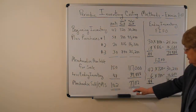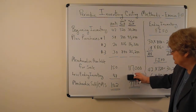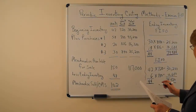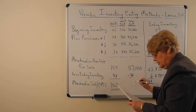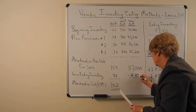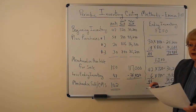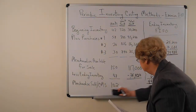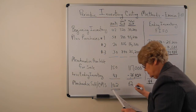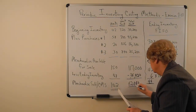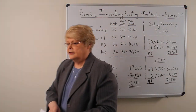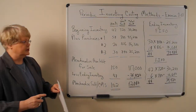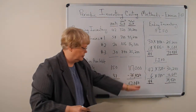Now I'm going to erase the previous work because I don't have room to put both on the board. So we put in the $34,920 for ending inventory. Our cost of merchandise sold under LIFO is $82,080. So that's how you would calculate ending inventory and cost of merchandise sold under LIFO.